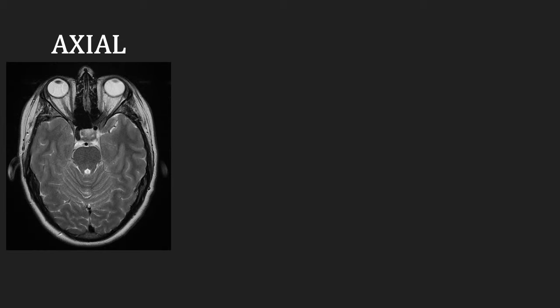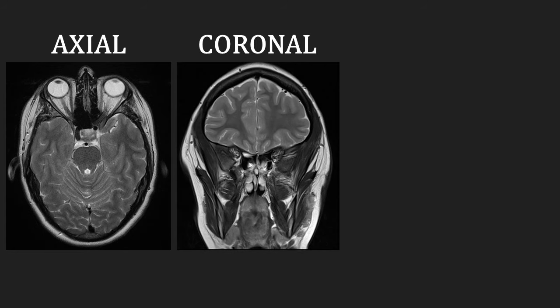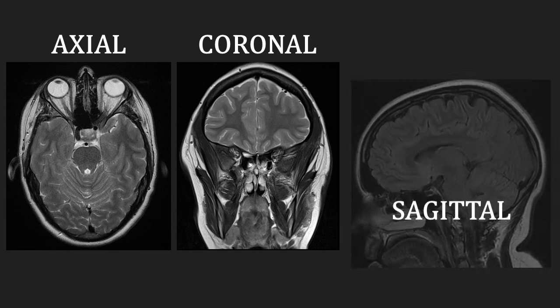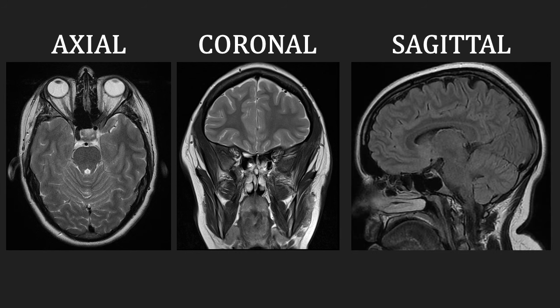In the axial plane, images are shown as if you have cut through the patient horizontally through the trunk. In the coronal plane, the patient is facing you and you have cut them vertically, separating the front from the back. And finally sagittal, where you have cut the patient 90 degrees to both axial and coronal planes, separating the patient's left and right so you can see them in profile.